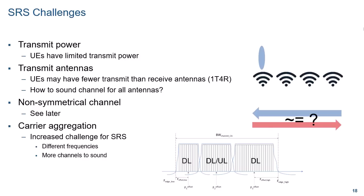Let's have a look at some of the challenges associated with SRS. The first and critical one is that UEs are power limited. This means that it is not possible for a UE that is far from the base station to transmit over a large bandwidth and be received with sufficient SNR by the base station to perform channel estimation. Another factor is that many UEs may have fewer transmit antennas than receive antennas — the UE may not have one separate RF chain for each antenna, receiving from four antennas but only transmitting from one at a time. Such a UE is called 1T4R. Using SRS to estimate downlink beamforming relies on the channel being reciprocal in TDD.